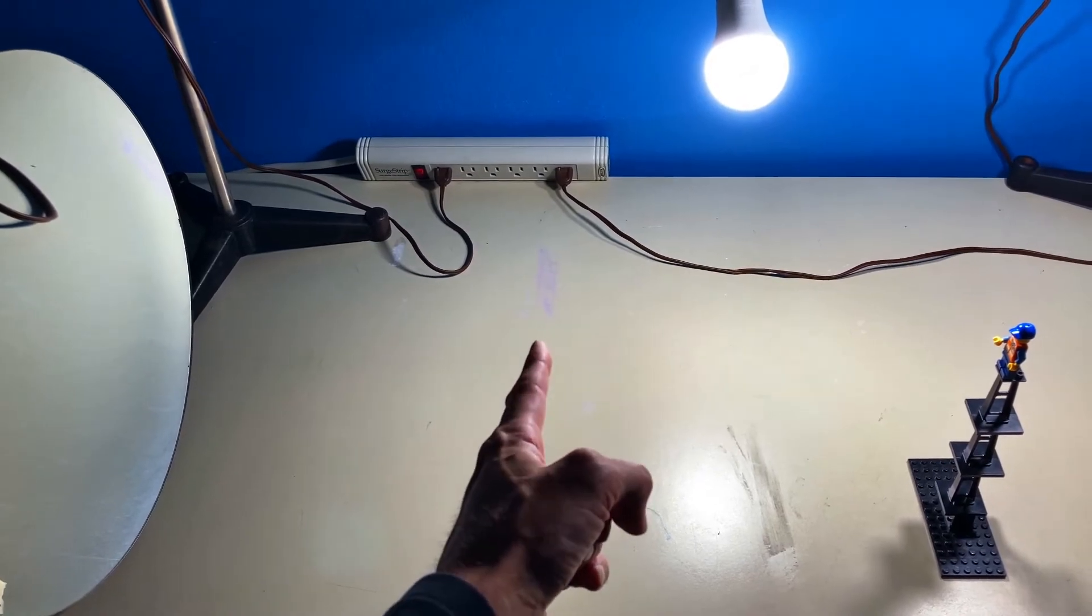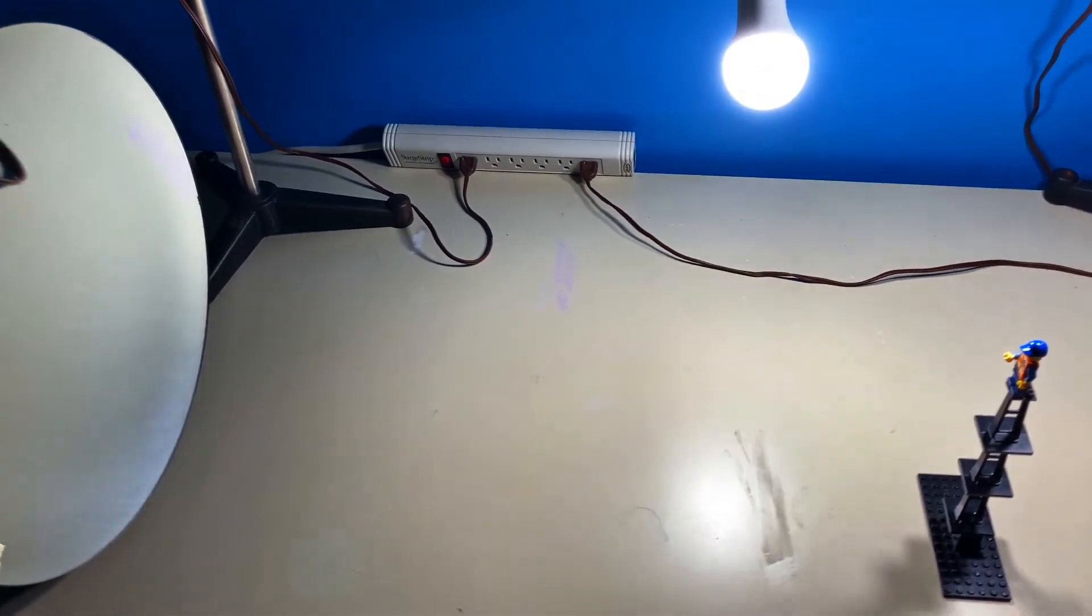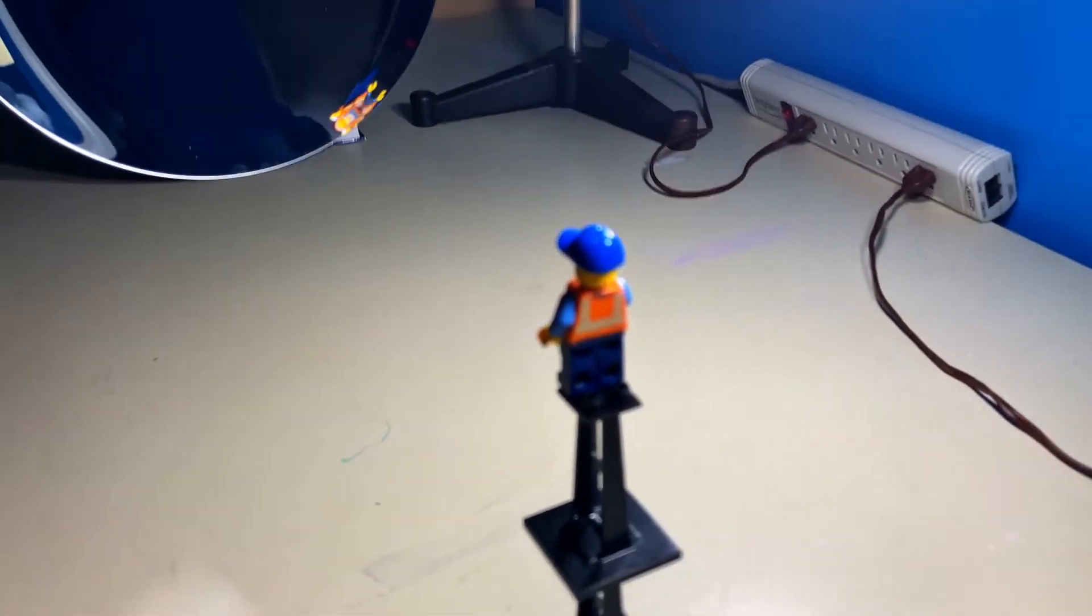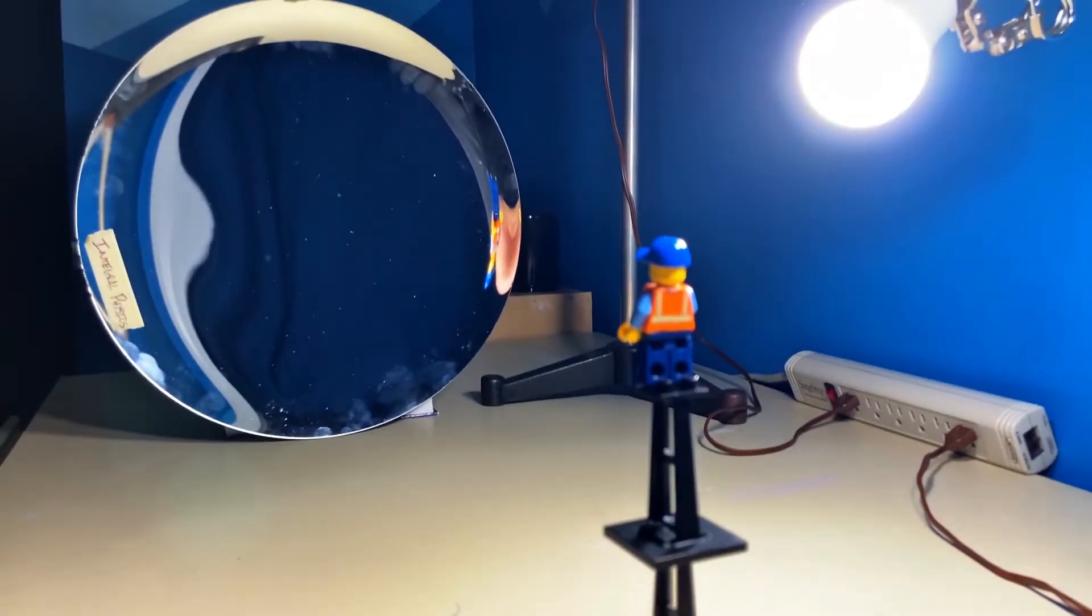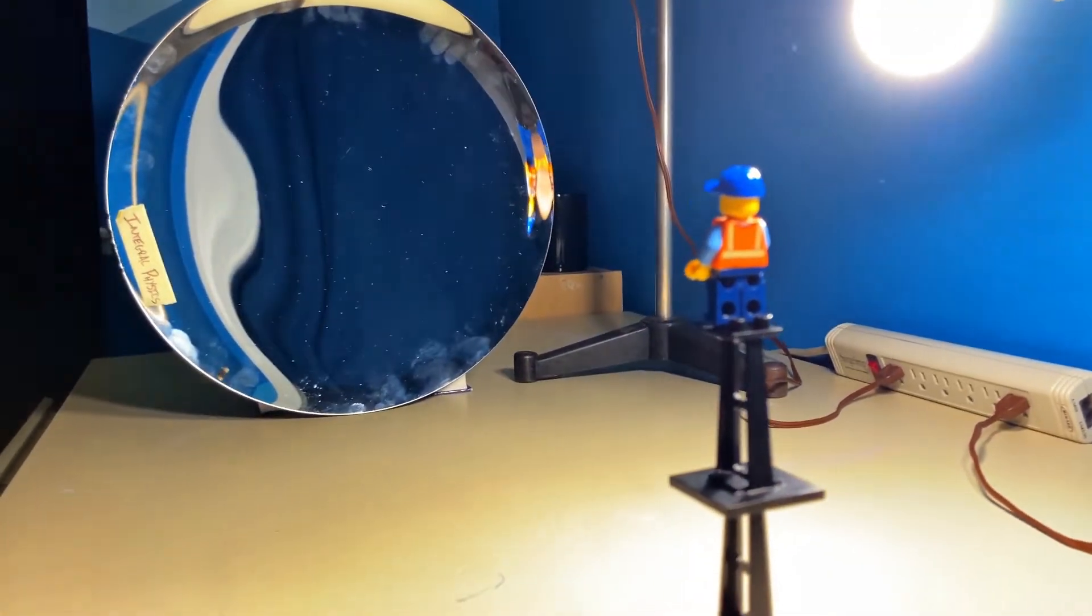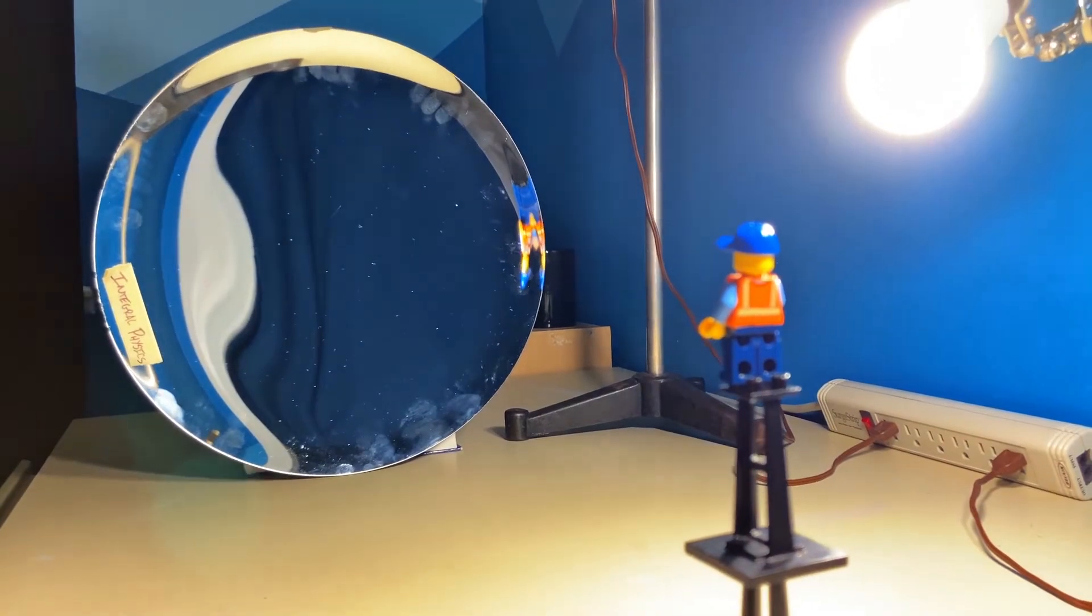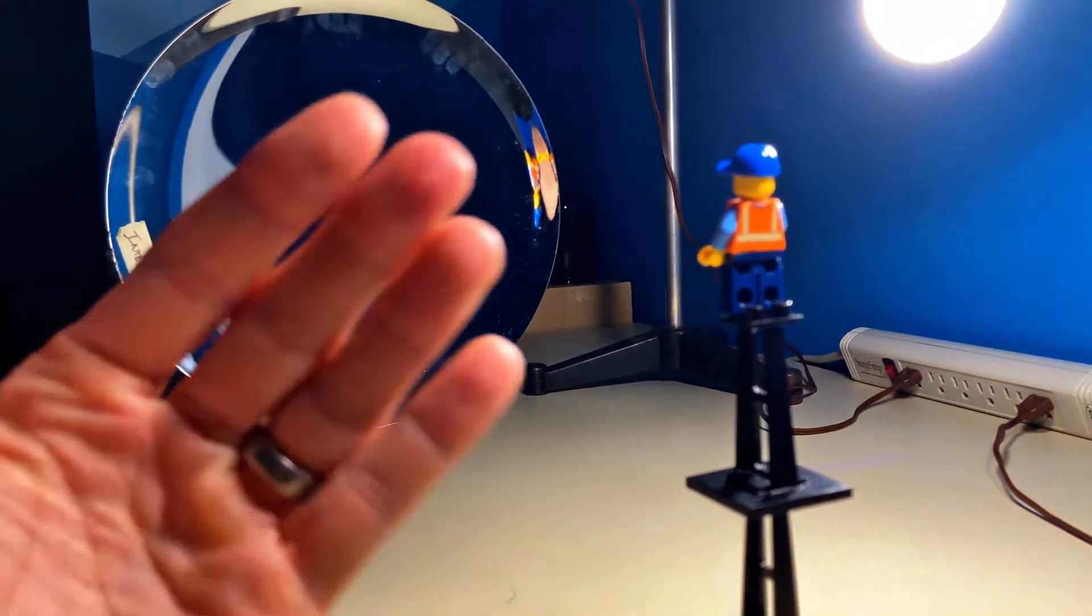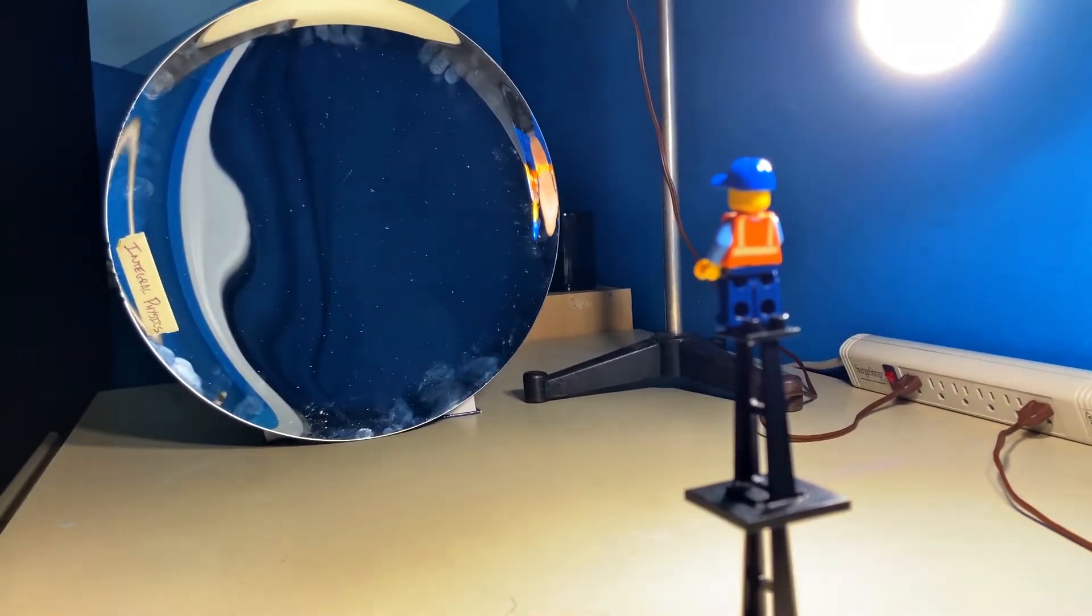So there's a focal point right about here, and if you go through and do a ray tracing diagram for an object that is out beyond the focal point of a mirror, what you find is there's what we call a real image. An image should be forming somewhere out here in front of the mirror.